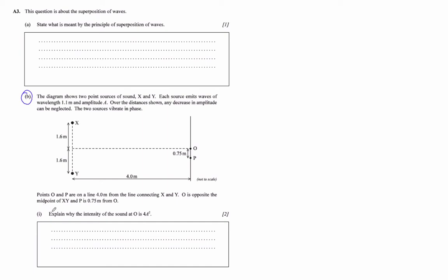All right, so this first one here says explain why the intensity at 0.0 is 4a squared. This is kind of a stupid question, so I actually changed it for the final, but let's answer this question because it's worthwhile.